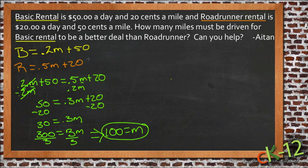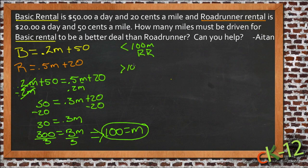If you travel less than 100 miles, then Roadrunner is a better deal. If you travel greater than 100 miles, then Basic Rental is a better deal. And we can see this graphically — I drew this up on a graph real quick here.